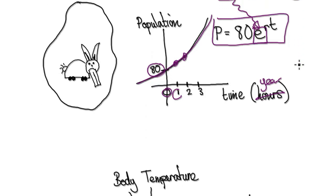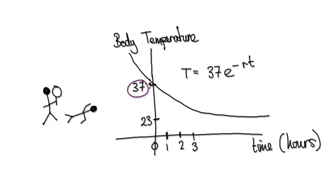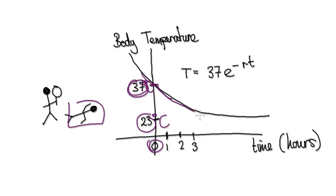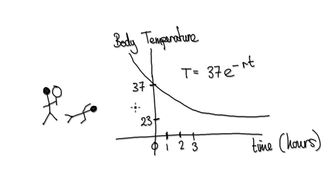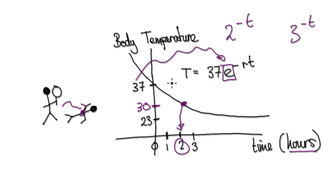Here's another example. Let's say you're a detective and you found a dead body. The body temperature of an average person is roughly 37 degrees Celsius, and room temperature is roughly 23 degrees Celsius. When a person dies at time 0, the body temperature is 37, and as time ticks away, the body temperature falls to room temperature. If you measure the body temperature and it's around 30, you can figure out the body has been dead for 2 hours. So why do we use e to model this? Why not 2 to the power of minus t or 3 to the power of minus t?